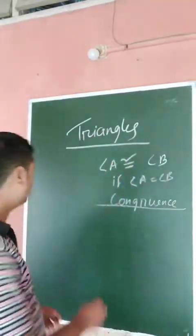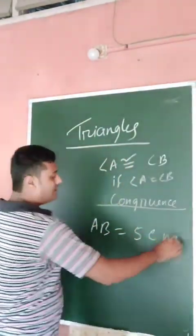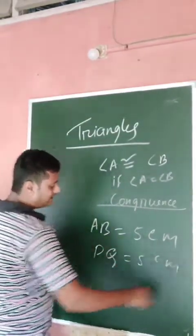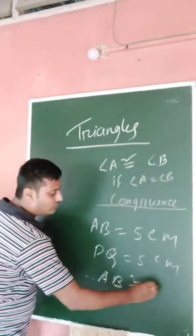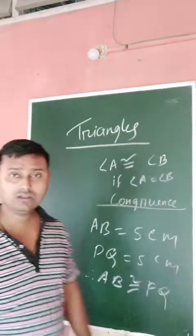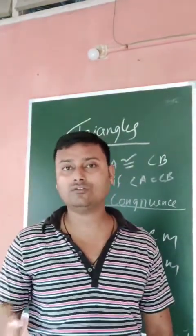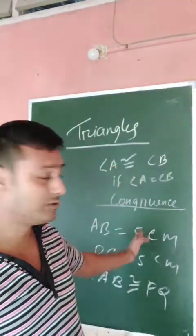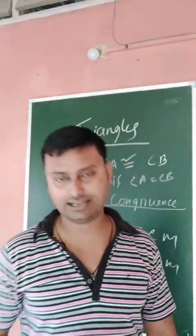For example, suppose line segment AB equals 5 cm and line segment PQ equals 5 cm, then AB is congruent to PQ. So congruence of angles depends on their values, and congruence of line segments depends on their lengths.